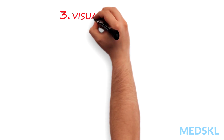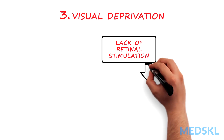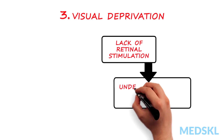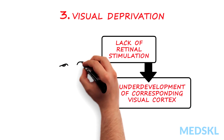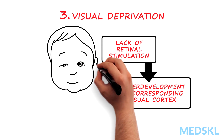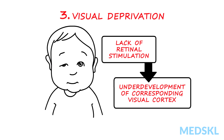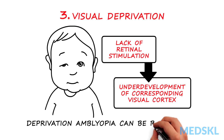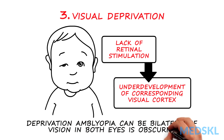3. Visual deprivation. In this case, a lack of retinal stimulation leads to underdevelopment of the corresponding visual cortex. Some causes of visual deprivation include congenital cataracts and a drooping eyelid known as ptosis. Importantly, deprivation amblyopia can be bilateral if vision in both eyes is obscured.